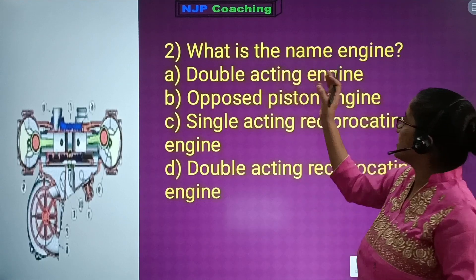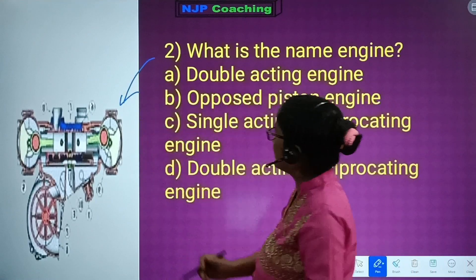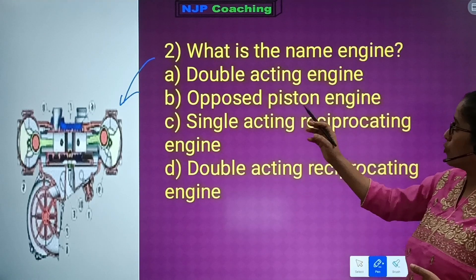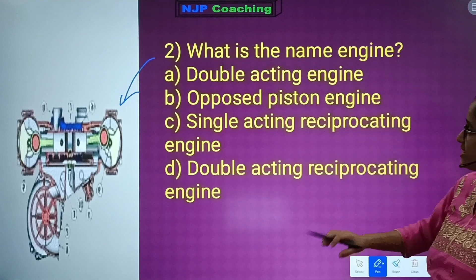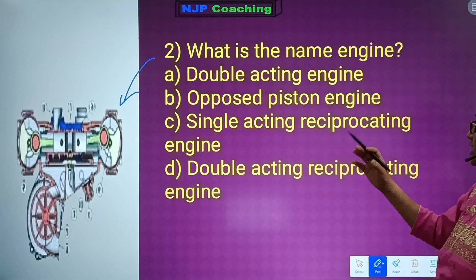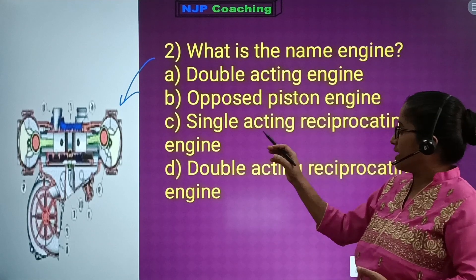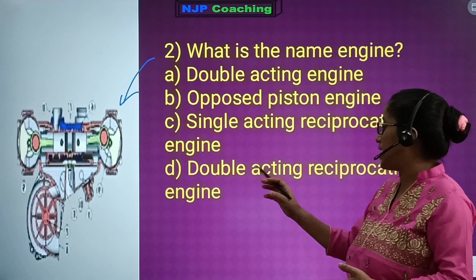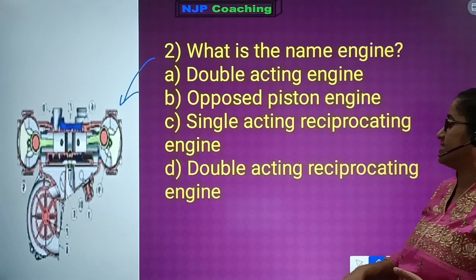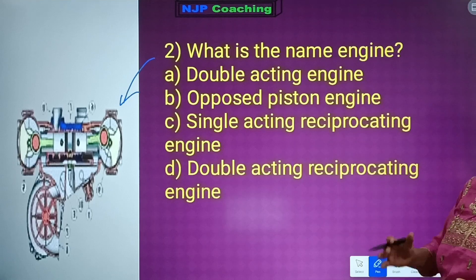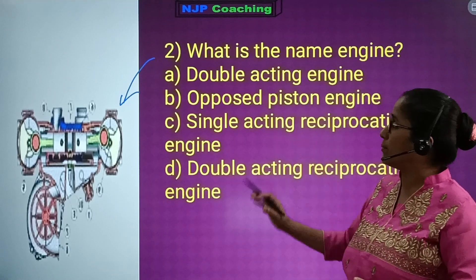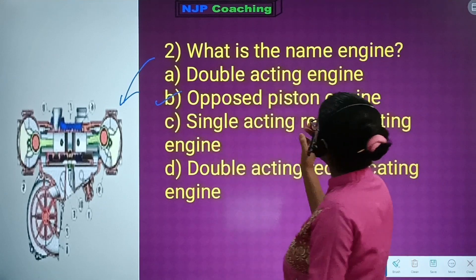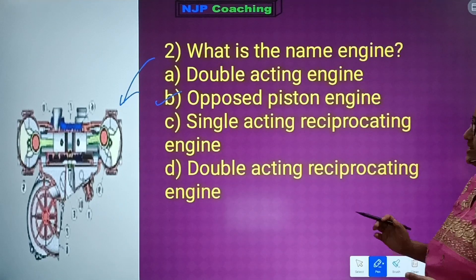Question number 2: What is the name of this engine shown in the picture? Options: 1) Double Acting Engine, 2) Opposed Piston Engine, 3) Viporic Piston Engine, 4) Single Acting Reciprocating Engine. The correct answer is number 2 — Double Acting Reciprocating Engine.